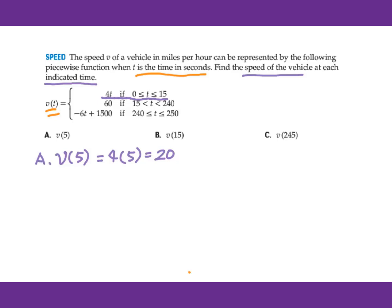For part b, v(15) — you're still using the first equation. That is 4 times 15, which equals 60.